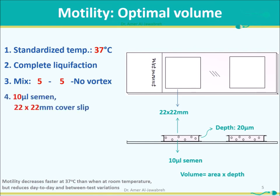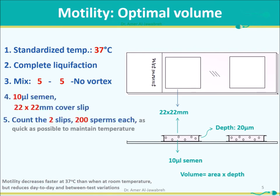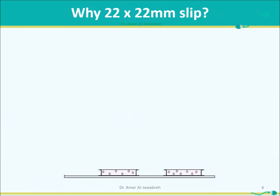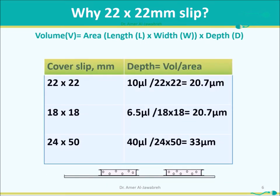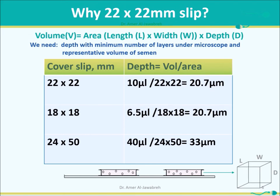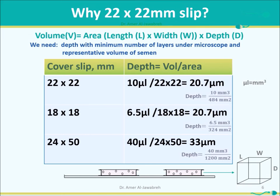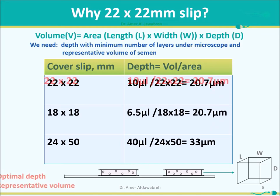Take 10 microliters of mixed semen and use a 22 by 22 cover slip. Count 2 cover slips, 200 sperms each, to reduce sampling error. The choice of cover slip is based on the formula: volume = length × width × depth. A 22×22 cover slip uses 10 microliters to achieve an optimal depth of 20 micrometers. An 18×18 cover slip uses too low a volume, while a 24×50 cover slip produces excessive depth, forming multiple layers which hinders motility assessment.